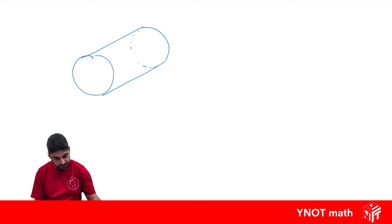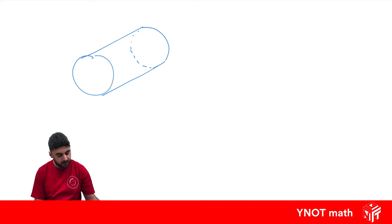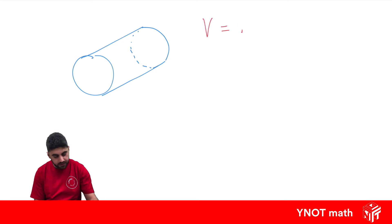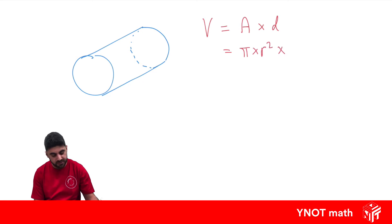Here we've got our cylinder, which is made up of two circular faces joined by a curved edge. It's like a prism because to find the volume, it's just the area of one of the circular faces times the distance between them. The area of a circle is pi times the radius squared, and that distance we call h. So the volume is pi times the radius squared times the height of the cylinder.